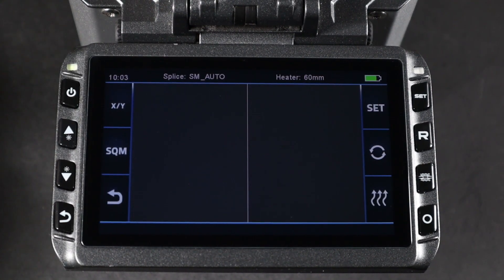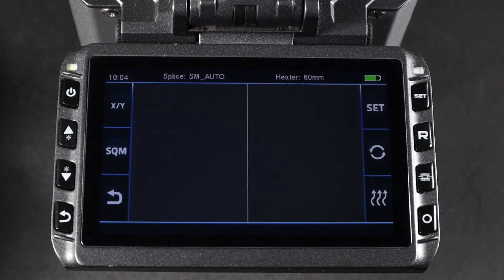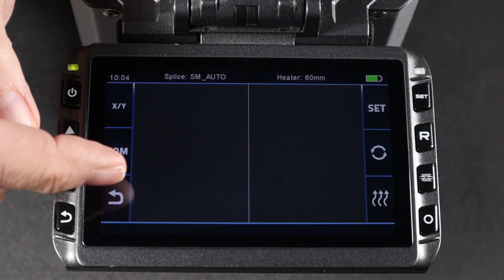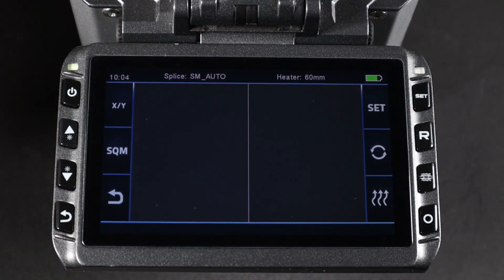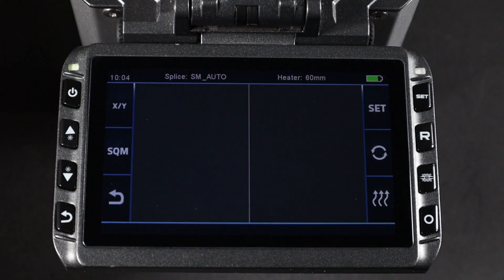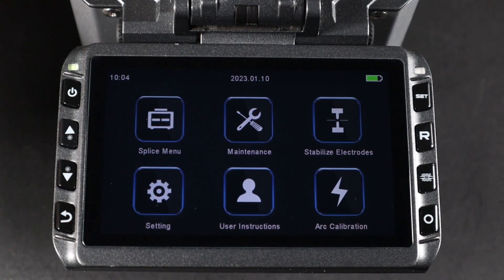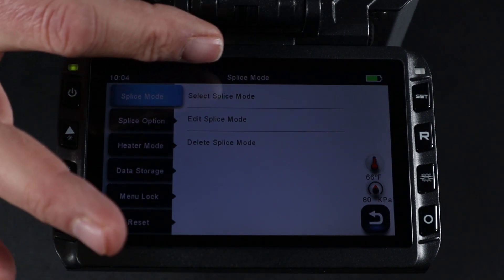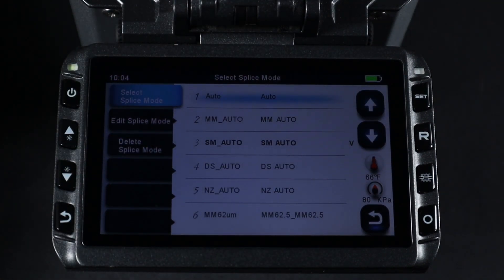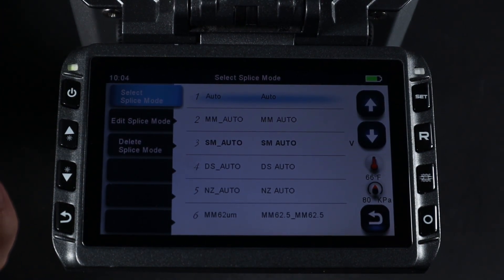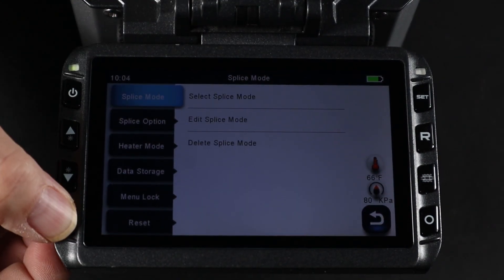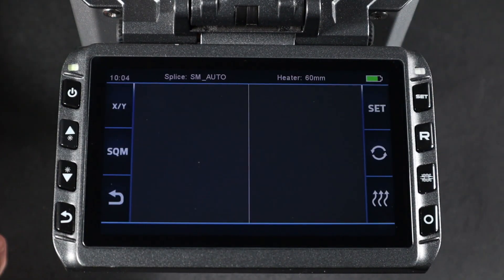Make sure your splicer setting is on the proper mode of the splicing you're about to perform. To change, go into your main menu by depressing the arrow on the screen or the arrow button. Once in your main menu, go to your splice menu and then select splice mode. Here you can scroll through and find the proper setting for the application you're about to perform. Once complete, hit your back button until you are back to the main splice screen.